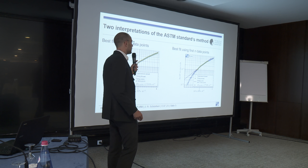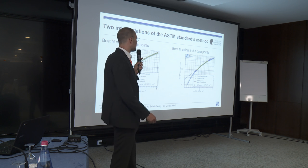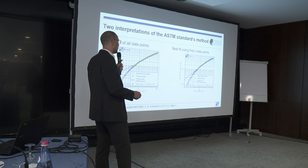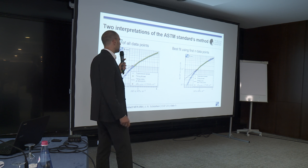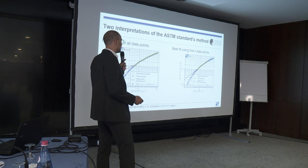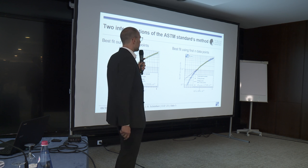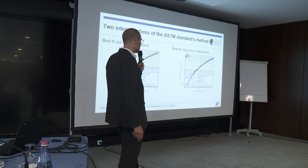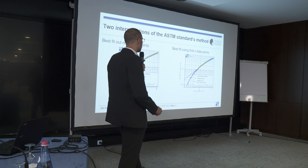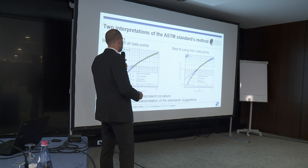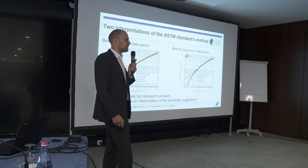Another interpretation compliant with the standard's text is to use the first n data points, where n is greater than or equal to five. Starting with the first data point near 10⁻⁷ mm/cycle, we successively calculate linear fits for 5, 6, 7, and more points, then select the fit with the best Pearson correlation ratio. This fit better represents the test data and reduces the artificial conservatism compared to fitting all data points. However, neither straight-line fit is able to represent the data curvature.